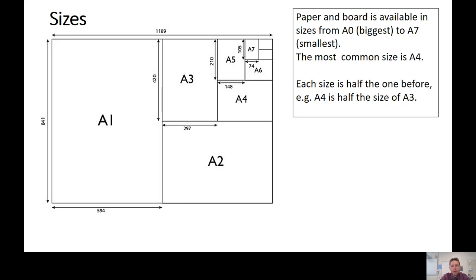Paper comes in different sizes — it's not all just one size. Now in the UK, most commonly we use something called the A sizes, and paper is bought and sold in this form. Paper and board is available from A0, which is the biggest, to A7, which is the smallest. The lower the number, the bigger the paper size. On this PowerPoint you can see some of the example A sizes available to us.